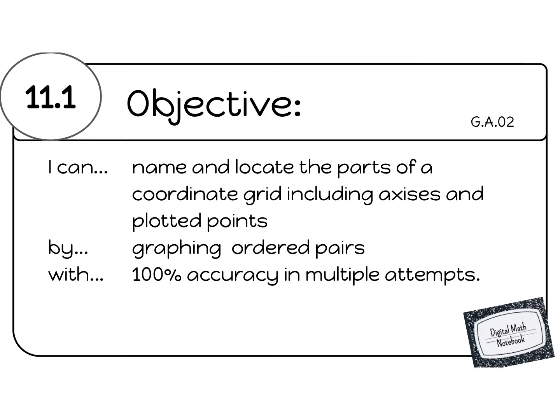Today's objective is I can name and locate the parts of a coordinate grid, including the axes and plotted points, by graphing ordered pairs with 100% accuracy in multiple attempts. Please pause now to type this into your digital math notebook.